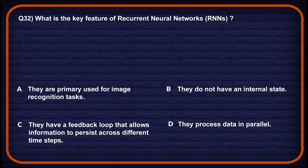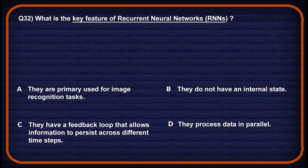Let's move on to question number 32: what is the key feature of recurrent neural networks? Option A: they are primarily used for image recognition tasks — image tasks are typically handled by CNNs, not RNNs, so not a potential answer. Option B: they do not have an internal state — RNNs rely on hidden states for retaining context, so again the wrong choice.